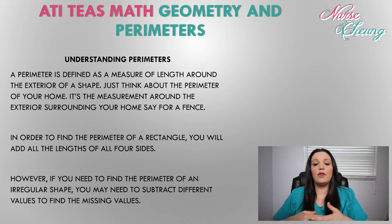However, if you need to find the perimeter of an irregular shape, you might need to subtract different values to find the missing values. Let's take a look at an example.